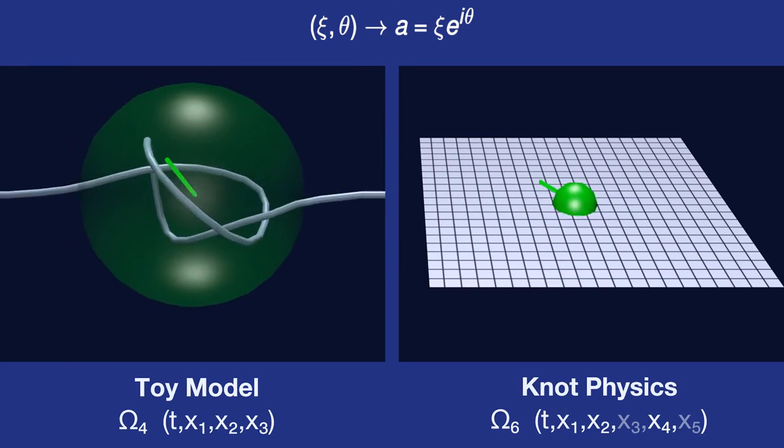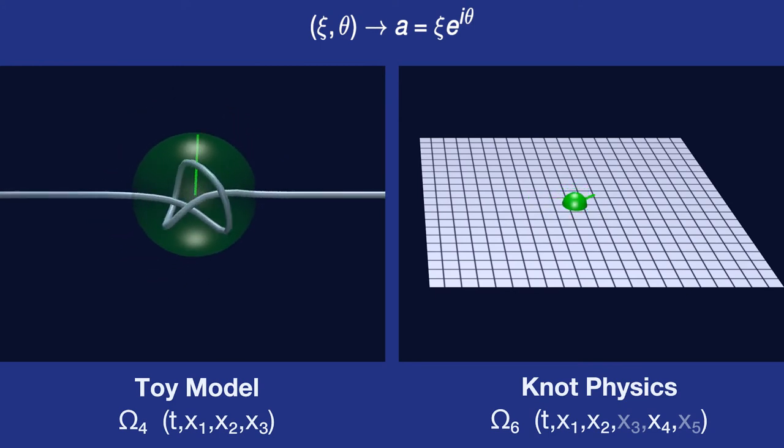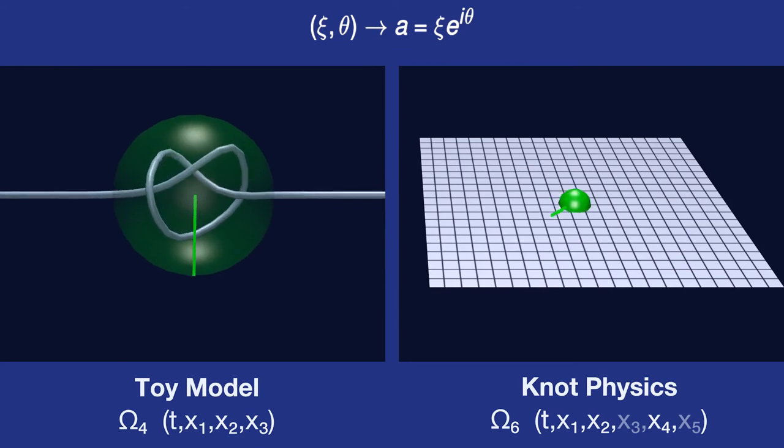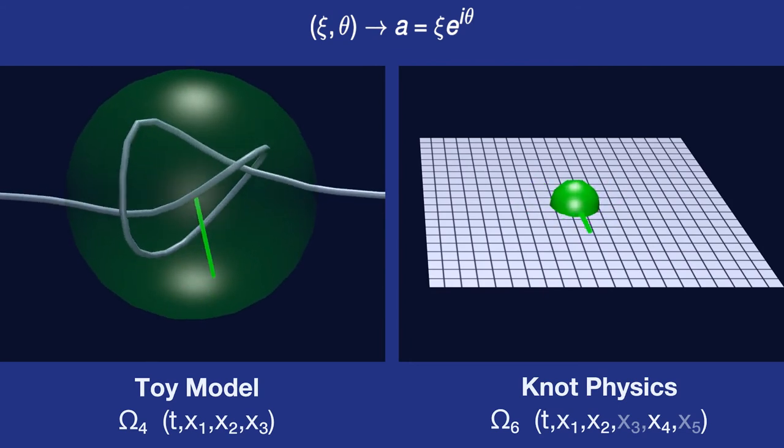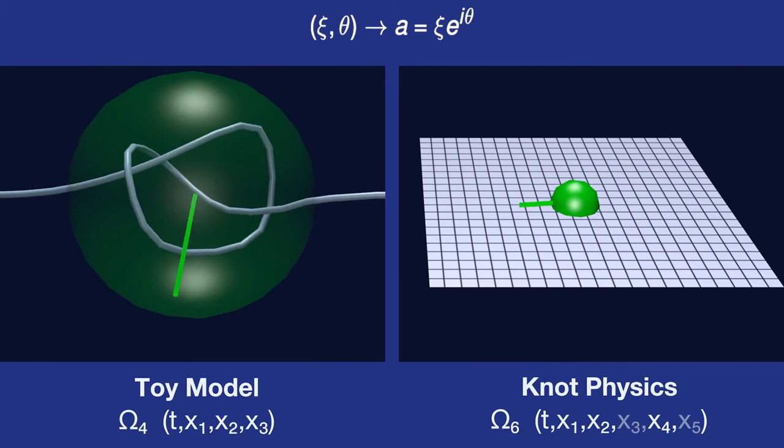We are even more challenged trying to represent the rotation of this knot in the spacetime manifold. The knot rotates in the dimensions x4 and x5, but we don't have enough dimensions in this video to show that rotation.